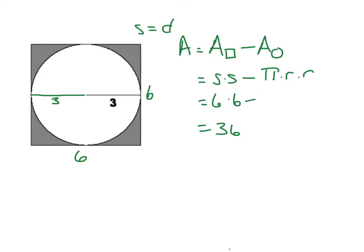And now I'll do the circle. I'm going to do pi times, the radius is 3 times 3, and that would equal 28.26. And when I do 36 minus 28.26, I get 7.74. And there's no units of measure on here, so I'm just going to write units squared.